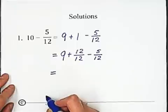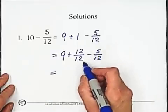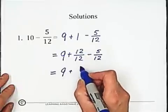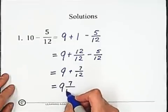It equals subtract the fraction part. 12 minus 5 equals 7. So 9 plus 7 over 12 equals 9 and 7 over 12.